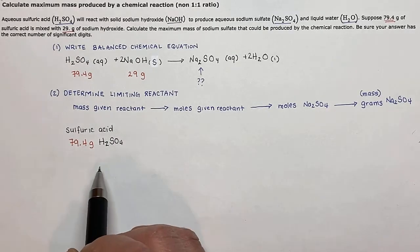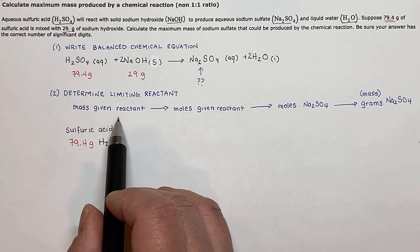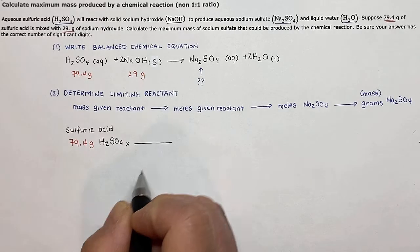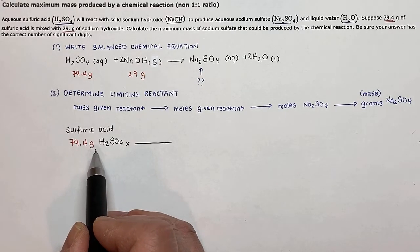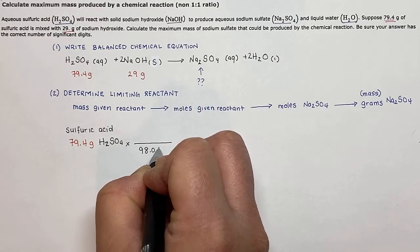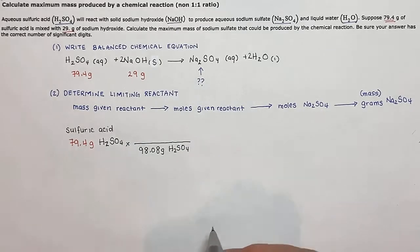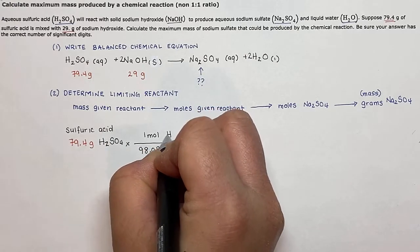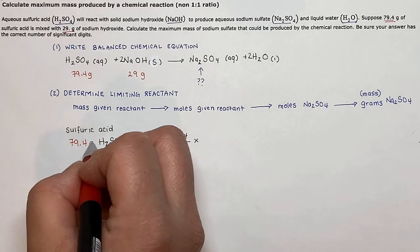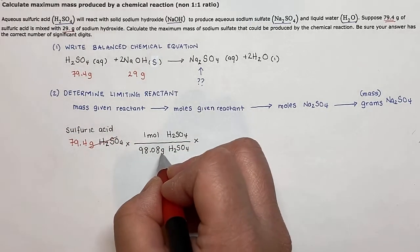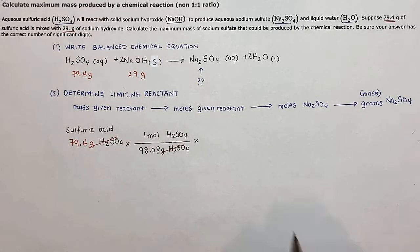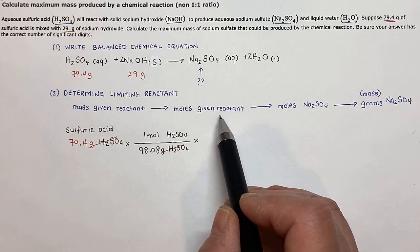To convert from grams of H₂SO₄ to moles of H₂SO₄, we use the molar mass as a conversion factor. Since grams are in the numerator, I put grams in the denominator: 98.08 grams of H₂SO₄ in the denominator and 1 mole of H₂SO₄ in the numerator. This cancels out the grams of H₂SO₄, leaving moles of H₂SO₄ as my remaining units.